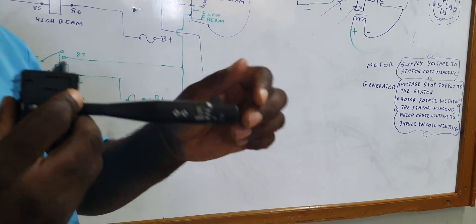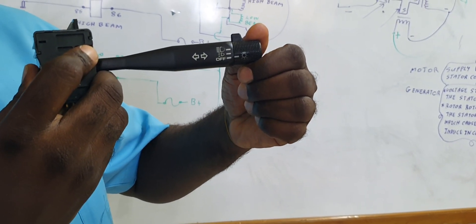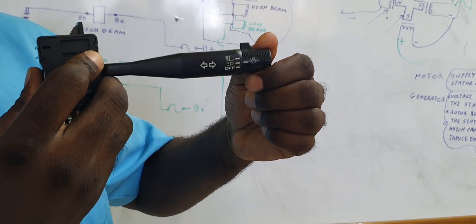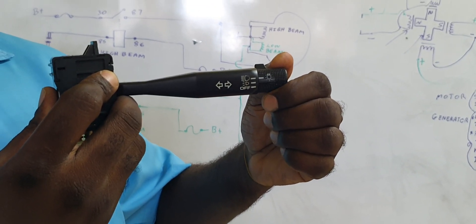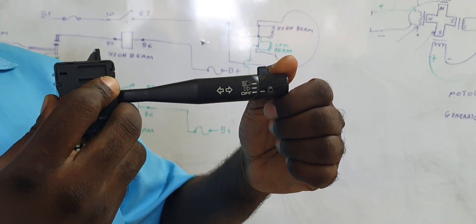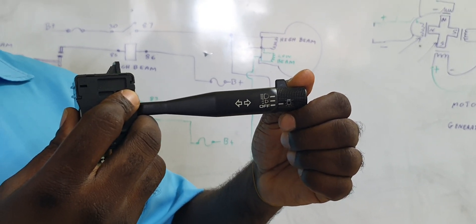When we have our controller, which is this switch right here, we have off, we have low beam, and we have high beam. So this single switch will control the high beam and low beam of our lighting system.